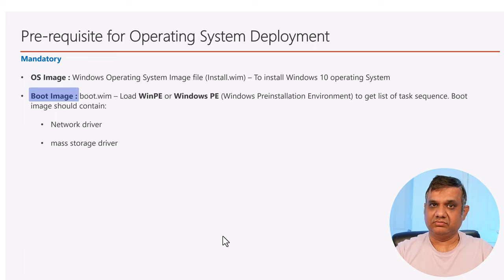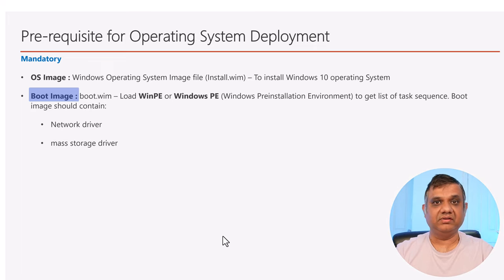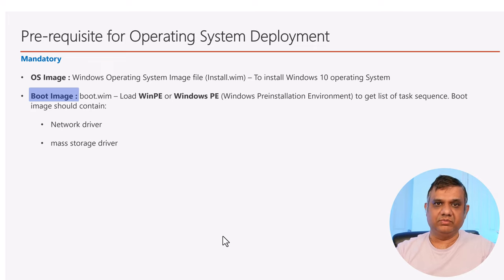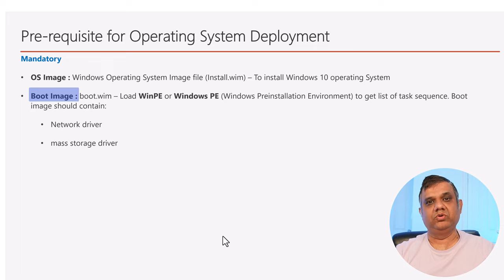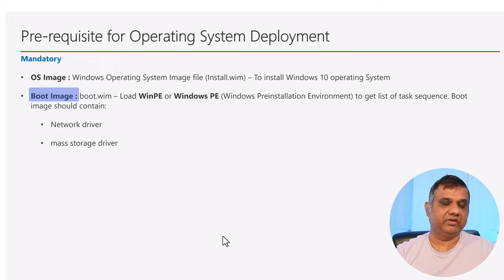The second important prerequisite is the boot image. The boot image needs two kinds of drivers: network drivers so it can get an IP address, and mass storage drivers so it can detect the hard disk. If the boot image can't detect the hard disk, the task sequence will fail. Microsoft usually handles this with each new ADK version, providing updated boot images with more drivers. But if you're facing missing IP or disk issues, that's the time to customize and inject drivers into your boot image.